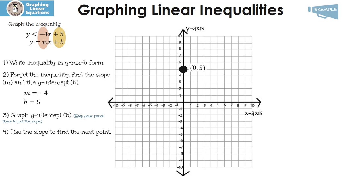The first thing we have to do is graph the y-intercept, which is 5 — put your pencil on that. Use the slope to find the next point. Our slope is negative 4, and slope is rise over run, so I write it as a fraction: negative 4 over 1. I'm going to go down 4 and run to the right 1. Put your pencil on the point, go down 4 — 1, 2, 3, 4 — and run 1. There's our next point. Let's do it again: down 4 — 1, 2, 3, 4 — and run 1.